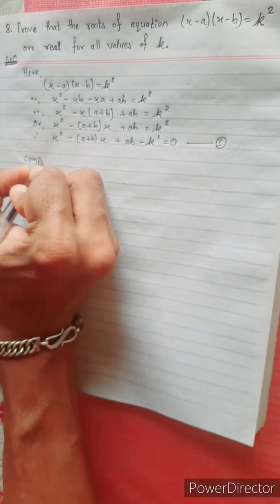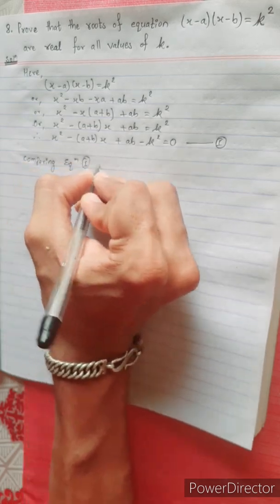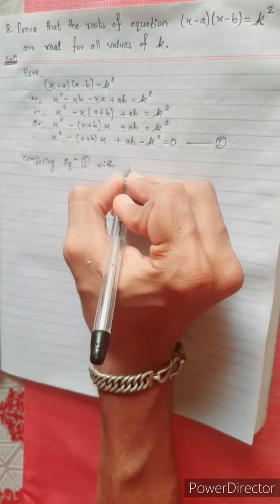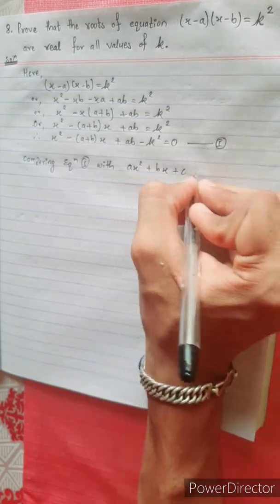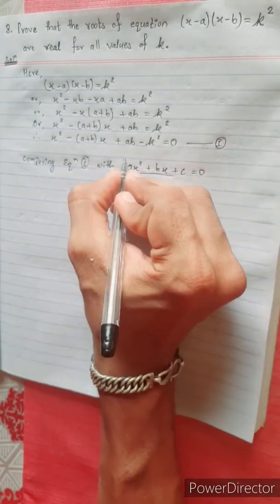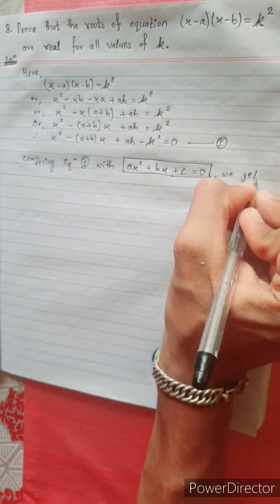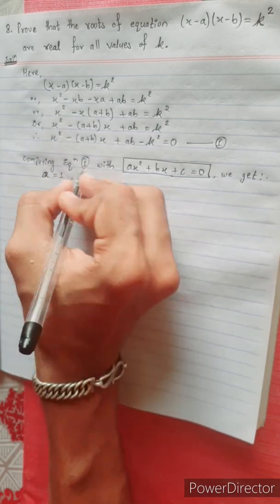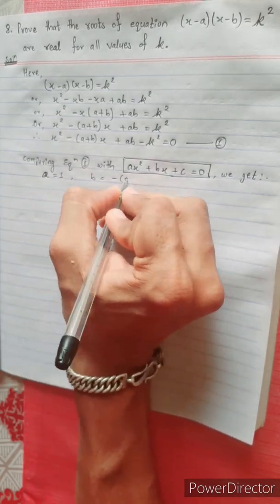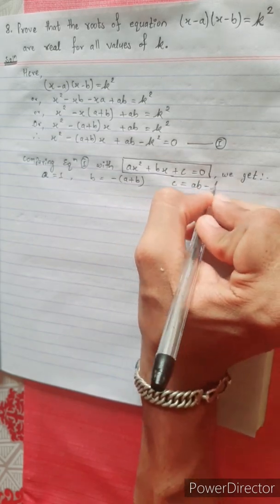Equation 1. Now I am comparing equation 1 with the standard quadratic equation: a x square plus b x plus c equal to 0. We get: a value is 1, b value is minus (a plus b), c value is a b minus k square.